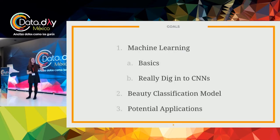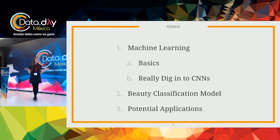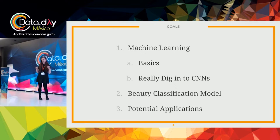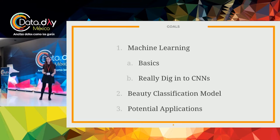Starting off, we have a couple goals here. There have been a couple of machine learning talks so far, so I'm going to go really quickly through the basics of machine learning. Then we're going to dig into CNNs — convolutional neural networks — which are a model optimized for processing images. Then we'll get into our beauty classification model, with a focus on the most important aspects of modeling going forward. And then we're going to go into potential applications — how can we use these abstract models and how are they useful?